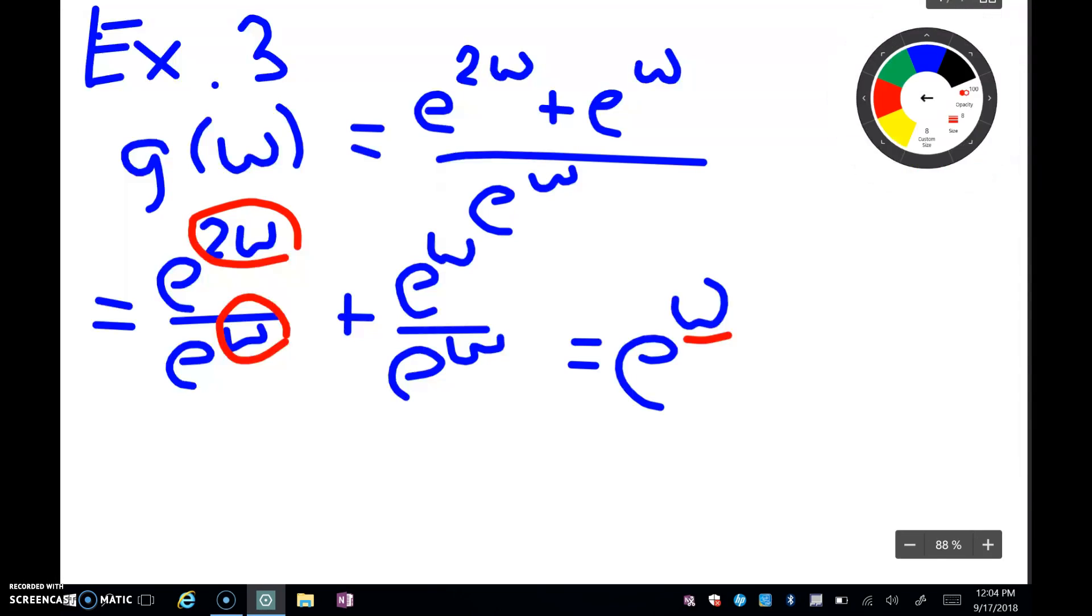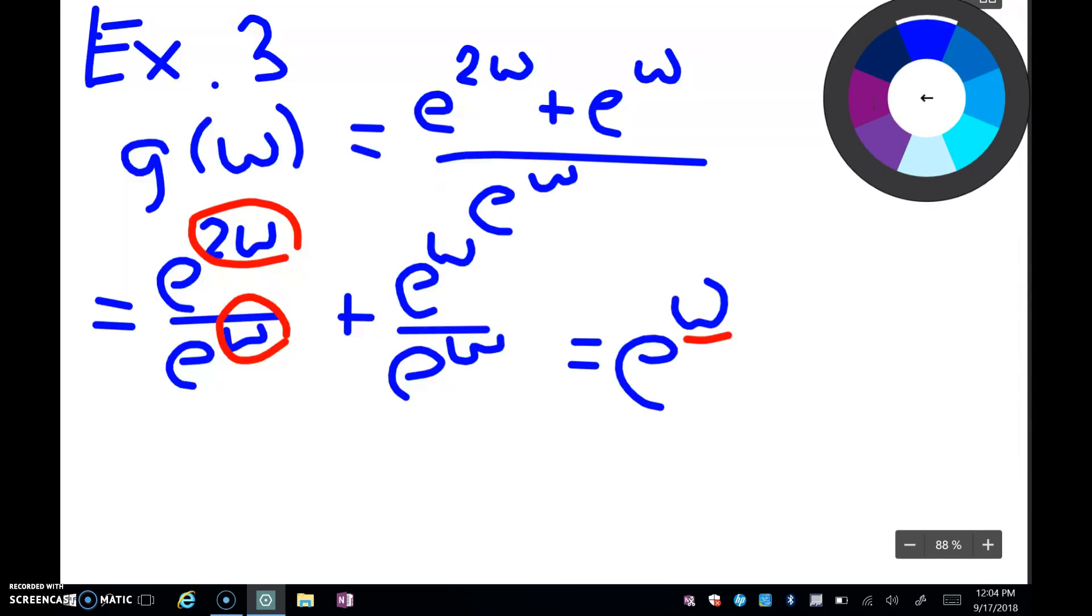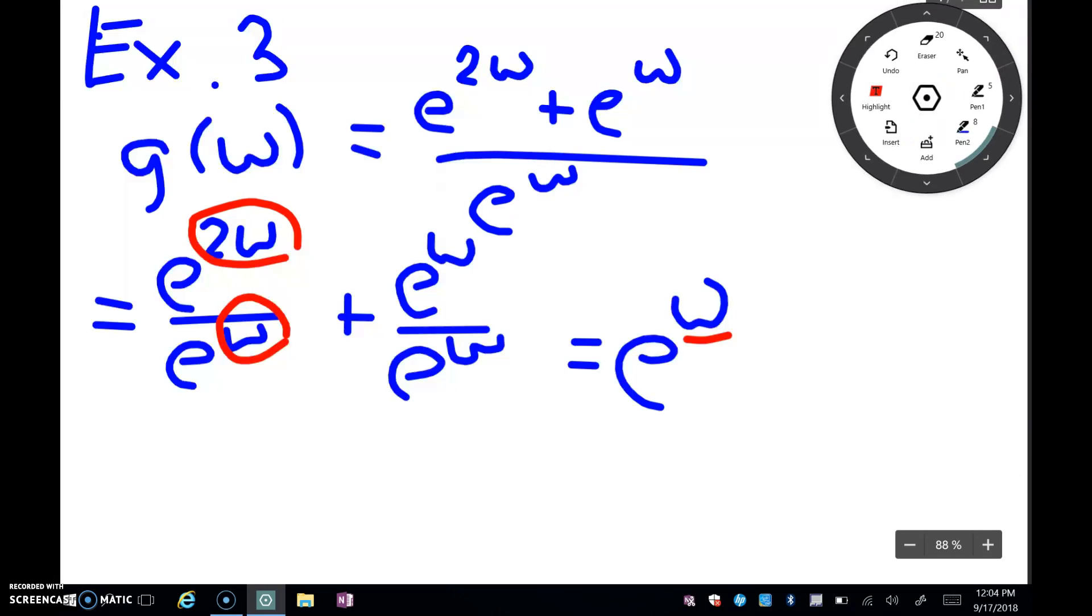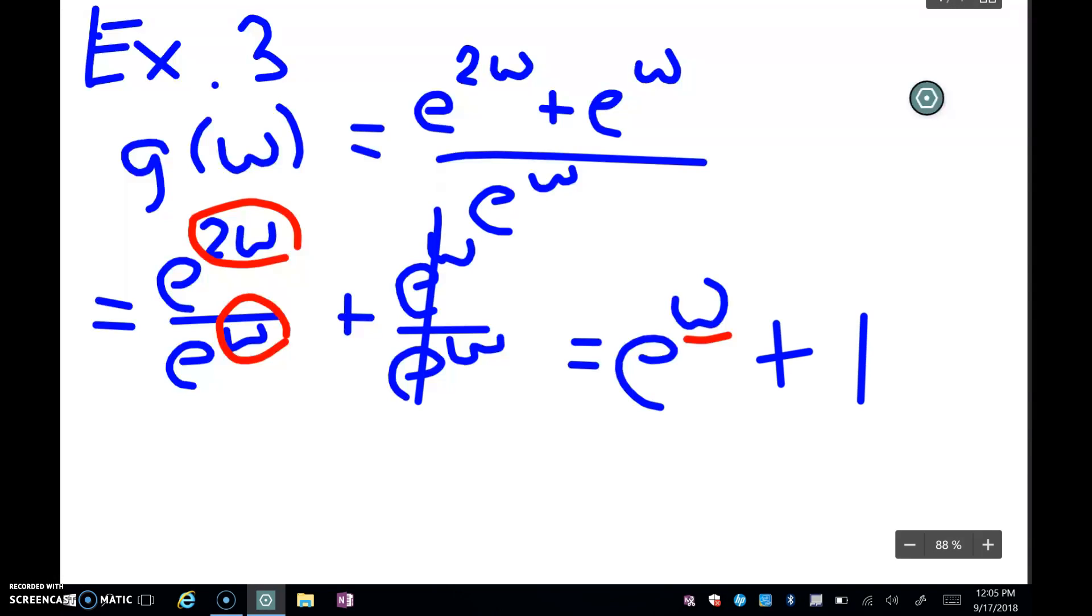And so now I'm going to go back to my blue and rewrite e^w divided by e^w. Well, they just cancel out. So that's when they cancel out. That gives me a 1. So my problem simplifies to a sum rule, e^w + 1.